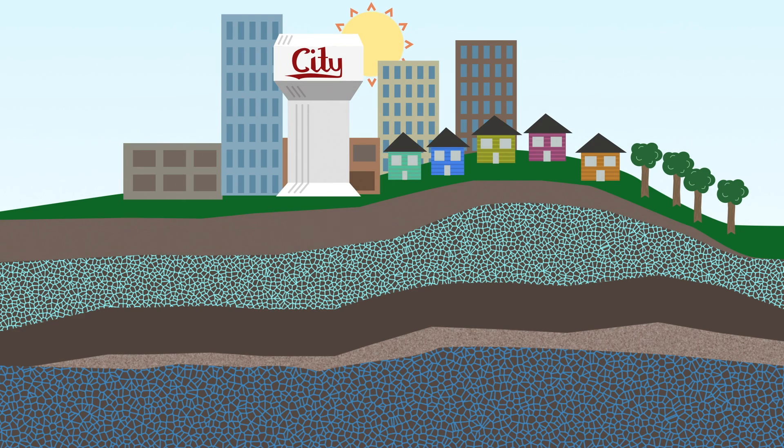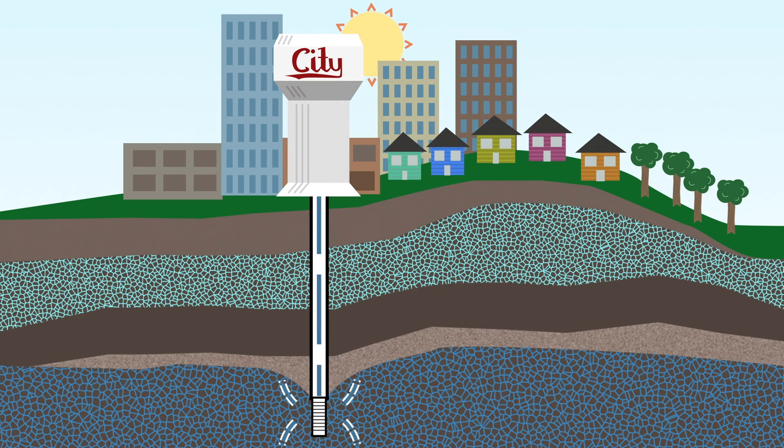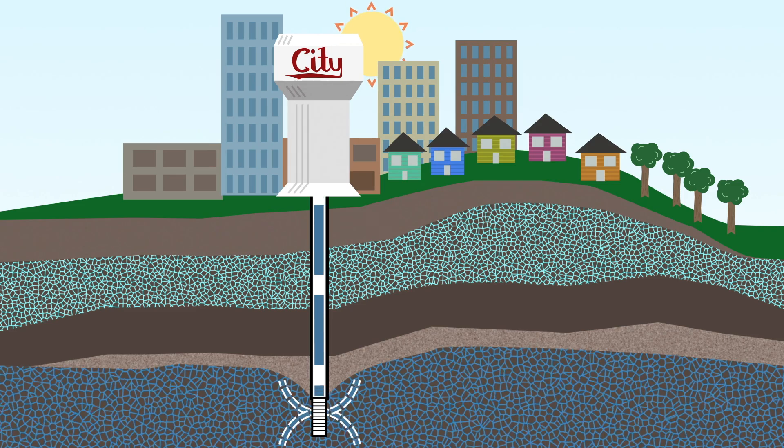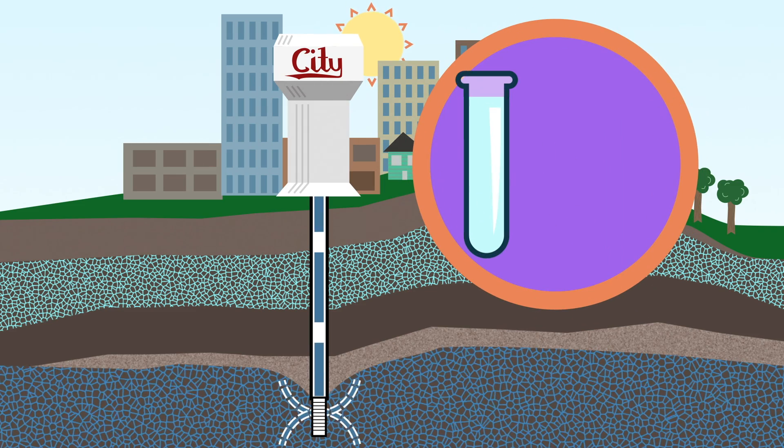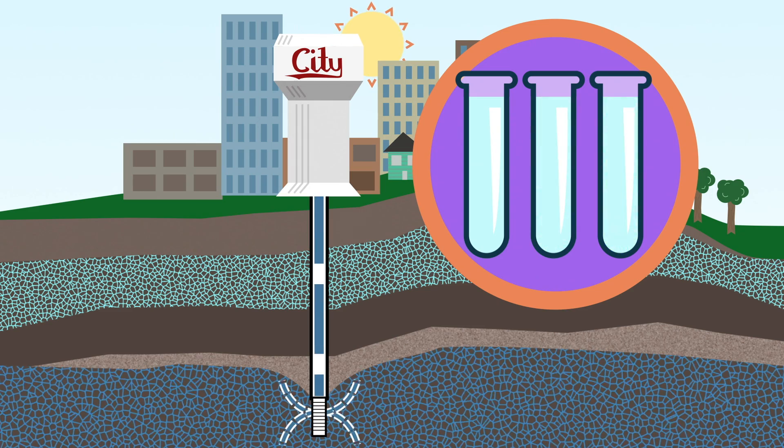Deep, municipal wells are often less vulnerable to contamination because pollution needs to travel through multiple layers of sand, rock, and clay to reach the well. Nonetheless, cities are required to regularly test their wells and ensure that the water is safe to drink.